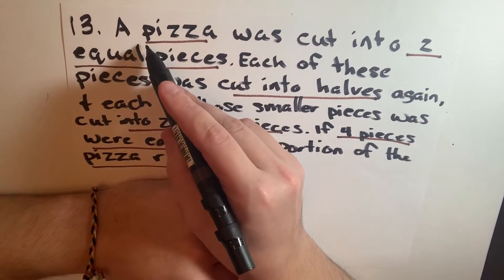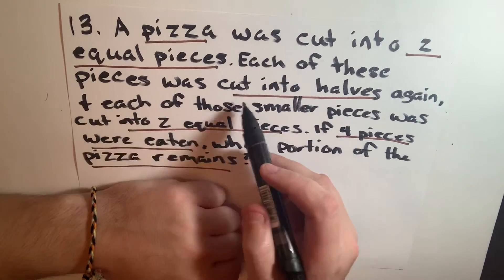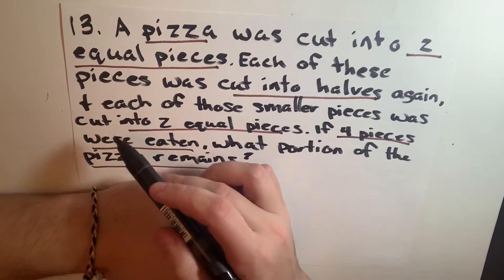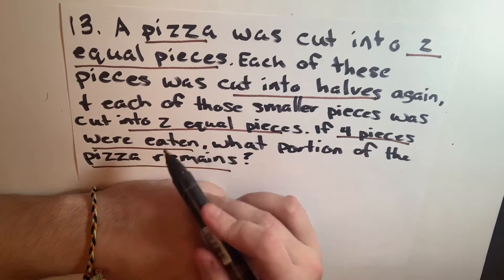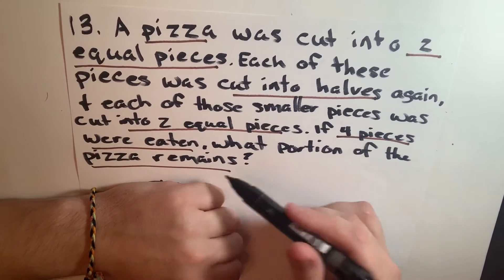For question 13, it says a pizza was cut into two equal pieces. Each of these pieces was cut into halves again, and each of those smaller pieces was cut into two equal pieces. If four pieces were eaten, what portion of the pizza remains?